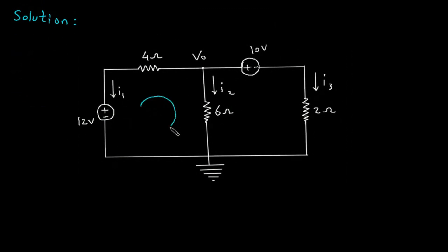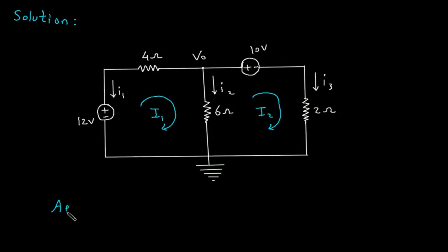Let's assume this is mesh number 1 with current I1, and this is mesh number 2 with current I2. Now we will apply KVL to mesh number 1.